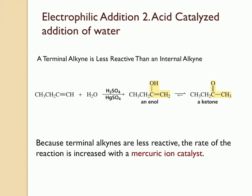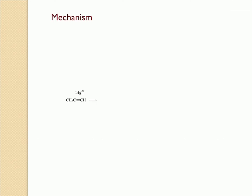Terminal alkynes are less reactive compared to internal alkynes, and therefore you need an extra catalyst for acid-catalyzed addition of water to occur. In this case, a mercury ion catalyst is used, which increases the rate of the reaction. In the mechanism for mercury ion-catalyzed hydration of an alkyne, the mercury ion first reacts with the alkyne — the electrons from the triple bond make a nucleophilic attack on the mercury ion to form the cyclic mercurinium ion.